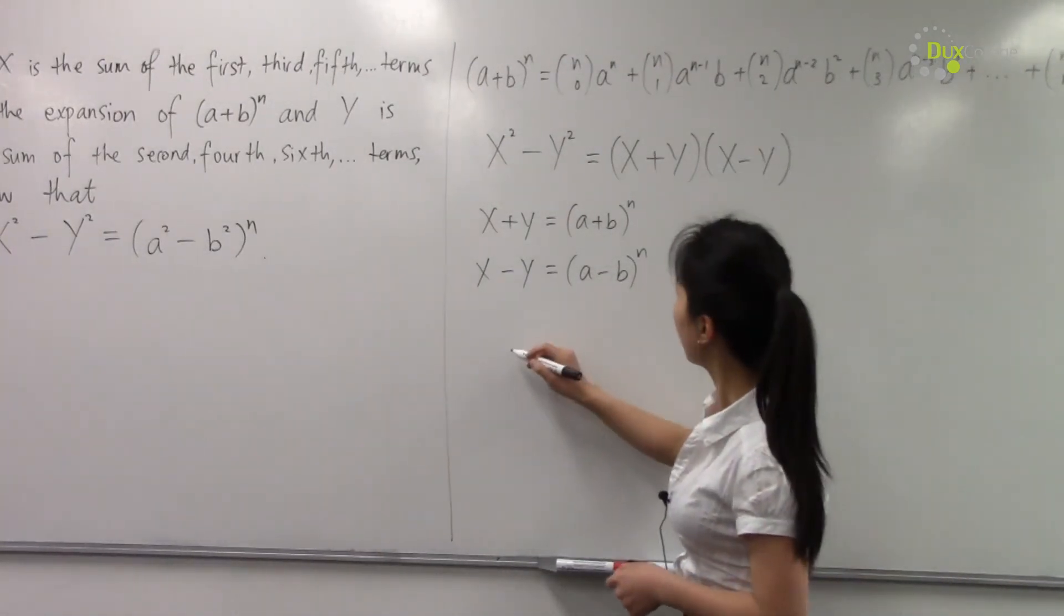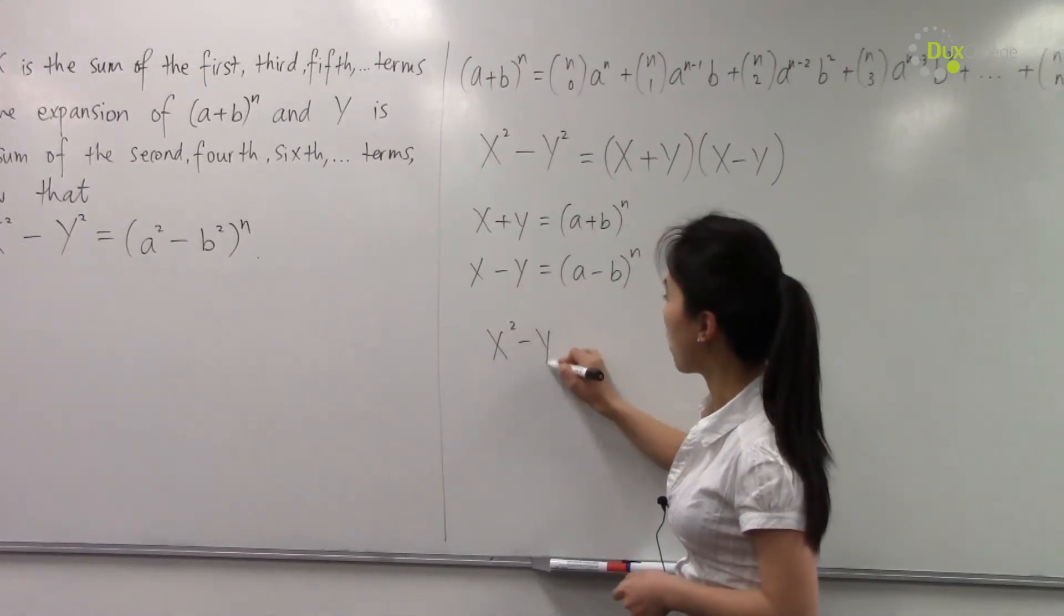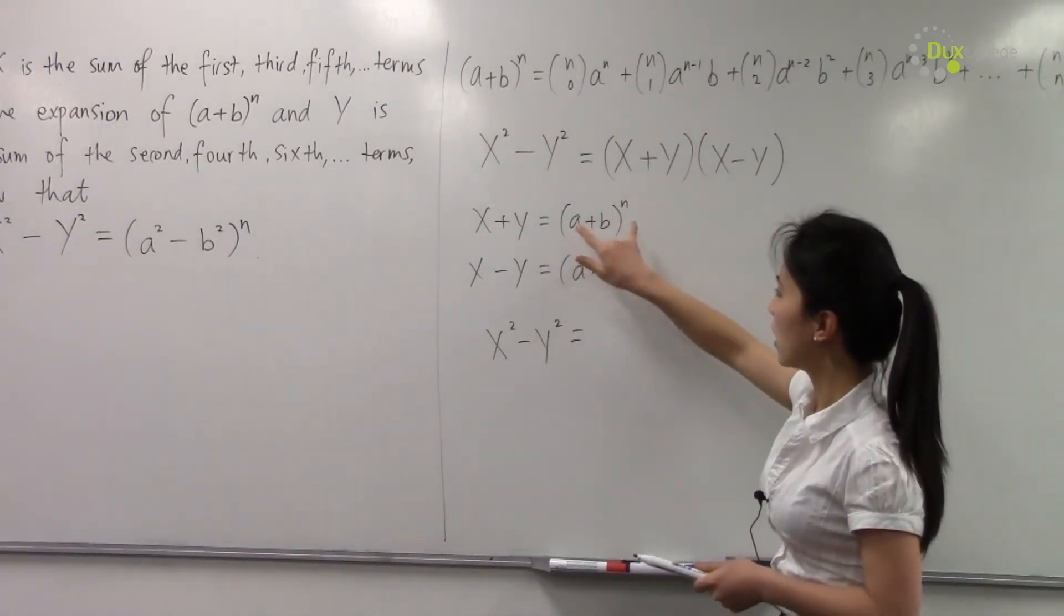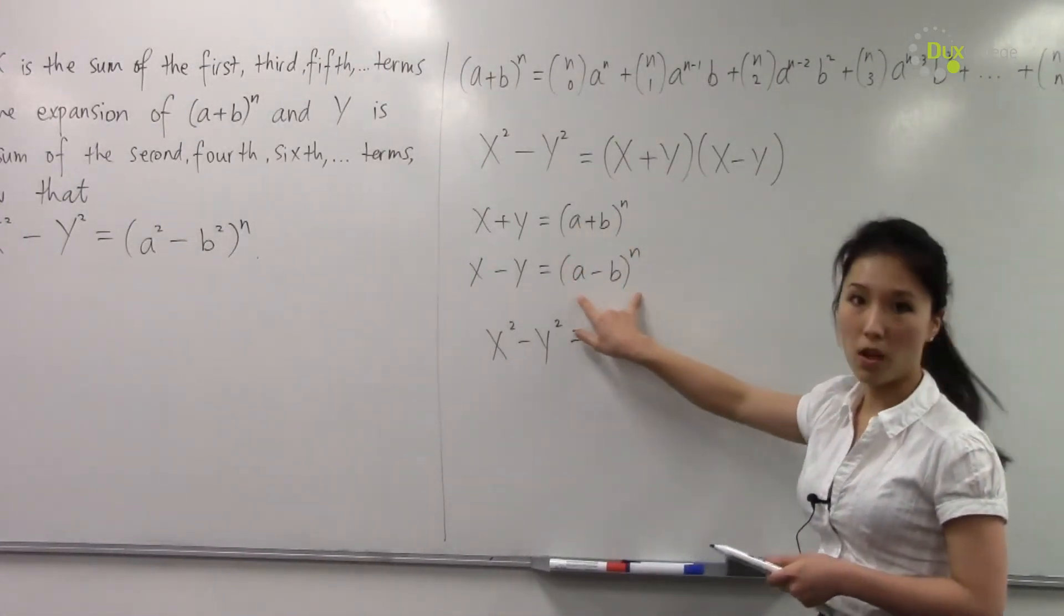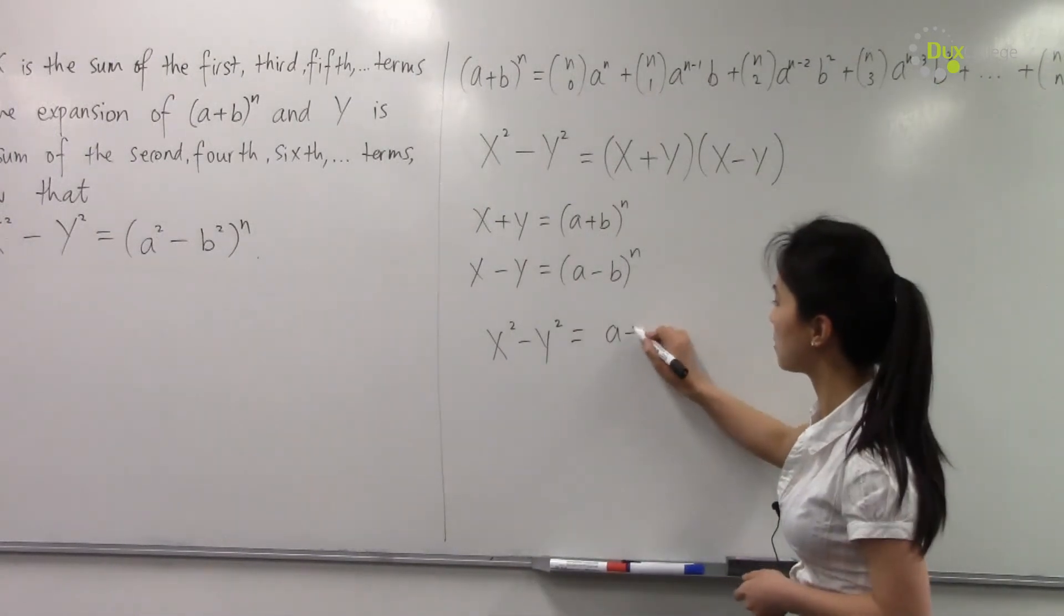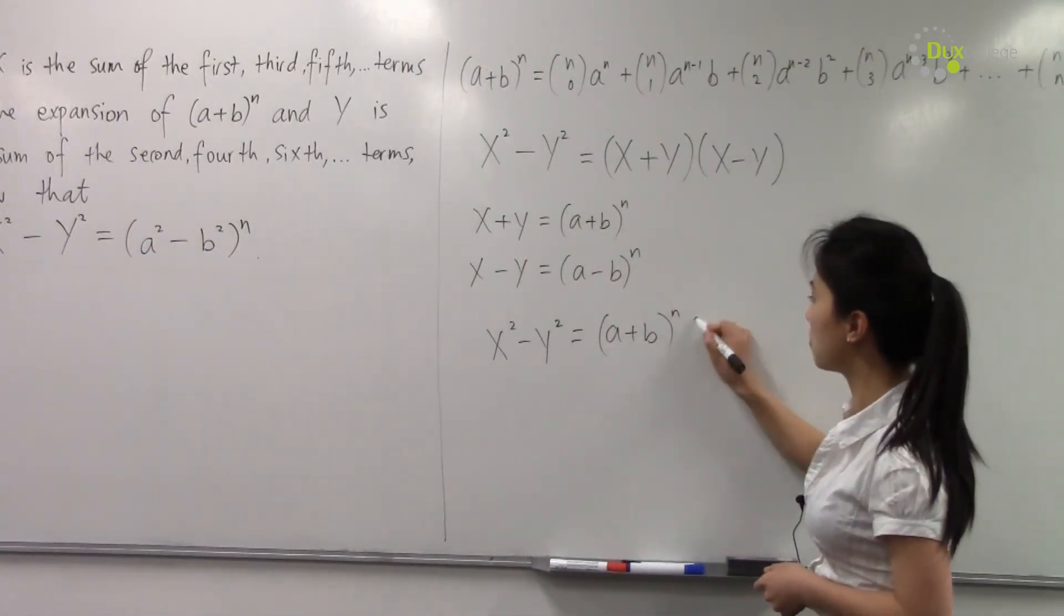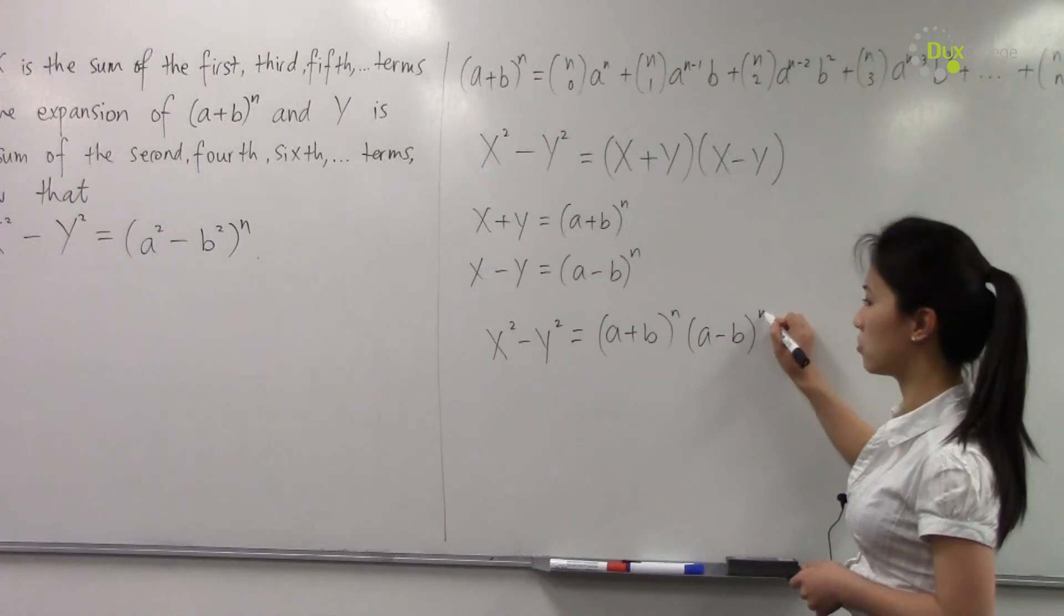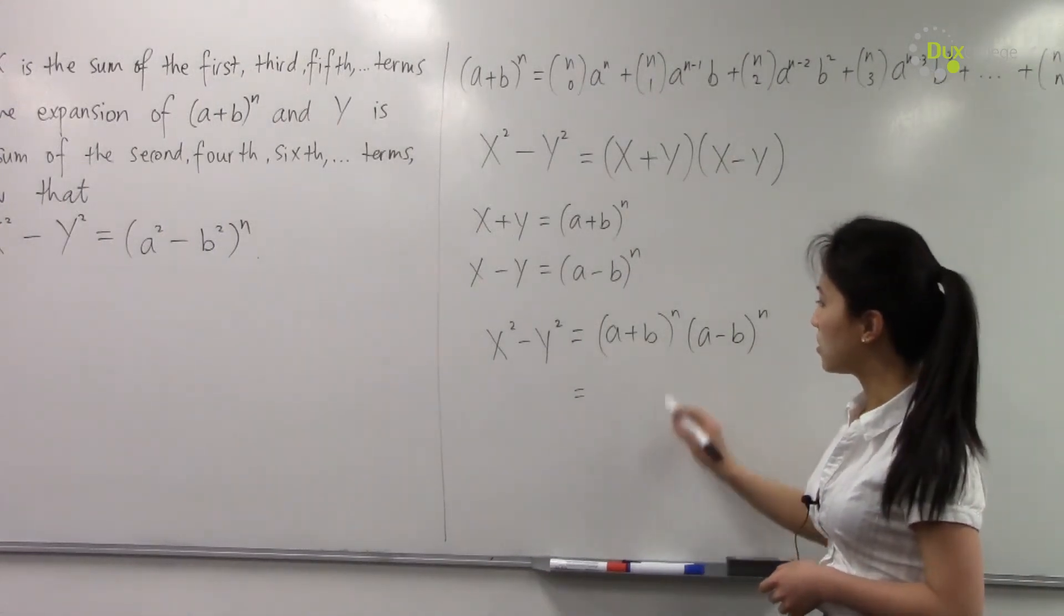Therefore, X² - Y² equals this multiplied by this: (a+b)^n × (a-b)^n.